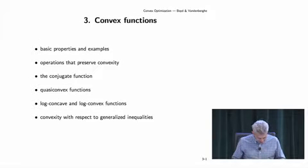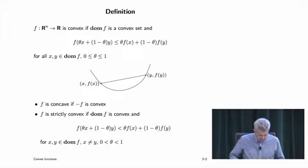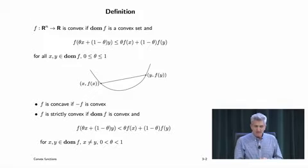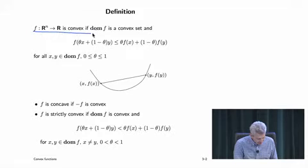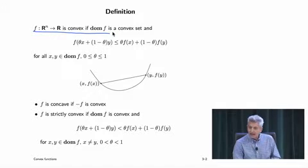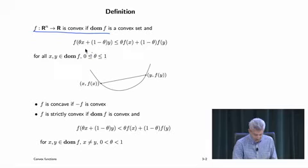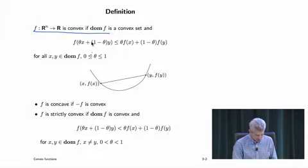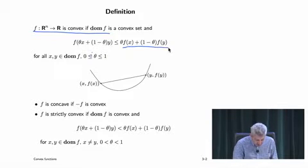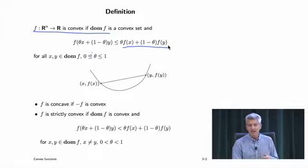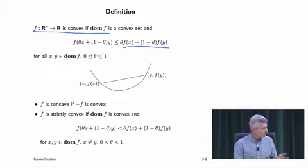We're going to start in on convex functions. The definition is very simple: a function is convex if its domain is convex, and it satisfies this inequality. The inequality says that if I take a mixture of two points — a convex combination of x and y, forming theta x plus 1 minus theta y — and evaluate f there, that's less than or equal to the same convex combination of the values of f evaluated at the endpoints.